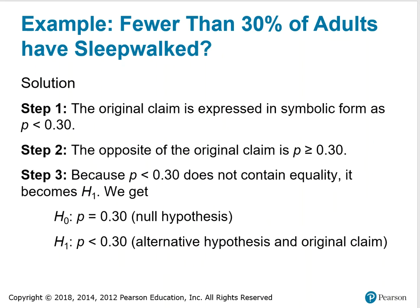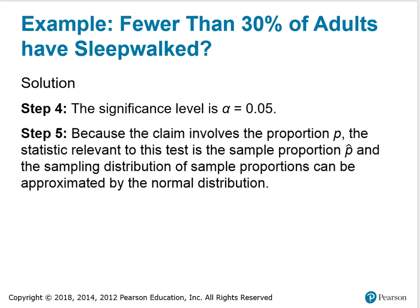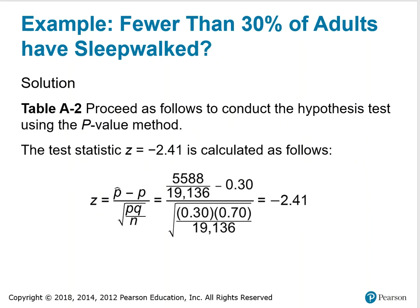Step 1: the original claim in symbol form is p less than 0.30; the opposite is p greater than or equal to 0.30. Because p less than 0.30 does not contain equality, it becomes H sub 1. H sub 0 is p greater than or equal to 0.30. The significance level alpha is 0.05. Because the claim involves proportion p, we use the sample proportion p-hat, approximated by the normal distribution. Using table A2, we calculate z to be negative 2.41.